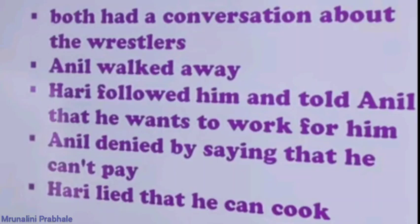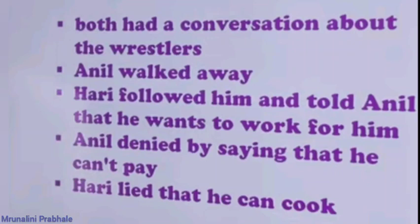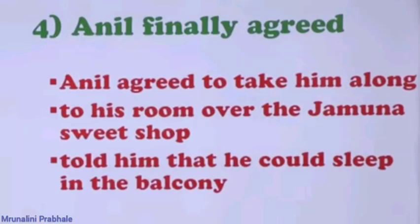Hari Singh took a new name every month, which saved him from the police. After their conversation about wrestling, Anil walked away and Hari Singh followed him, telling him he wanted to work for him. Anil was shocked and said he couldn't pay him, but Hari claimed he could cook. Anil finally agreed to take him along.